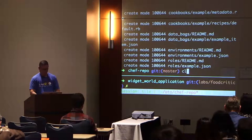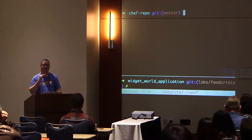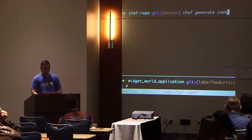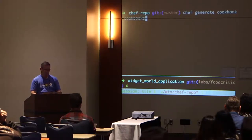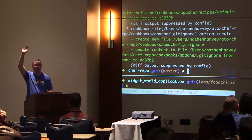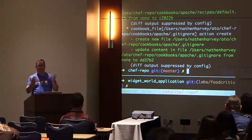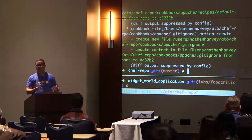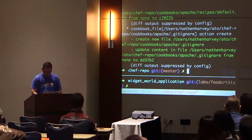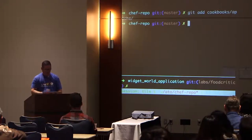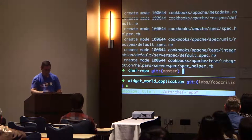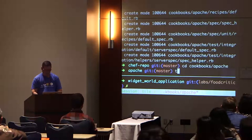What I want to do is create a cookbook to manage Apache. I want to define the desired state of Apache. Chef's generate command — I'm going to run 'chef generate cookbook' and put that cookbook in the cookbooks directory and call it Apache. The Chef generate command is similar to using Rails scaffolds. There's a big difference though: I just created that scaffold and I'm not going to delete all the files next — that's the difference between the Chef generate command and the Rails generate command. Then I'll 'git add cookbooks/Apache' and 'git commit.'